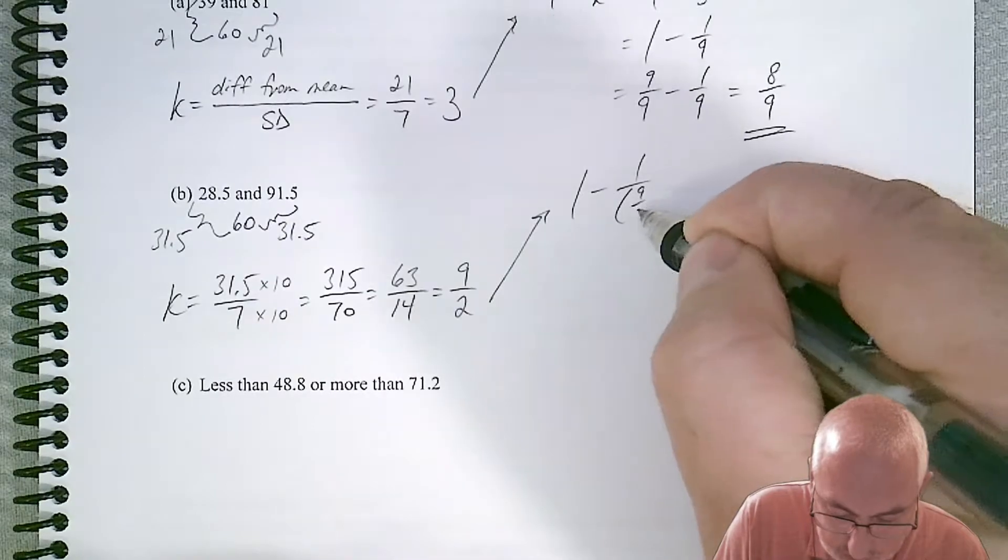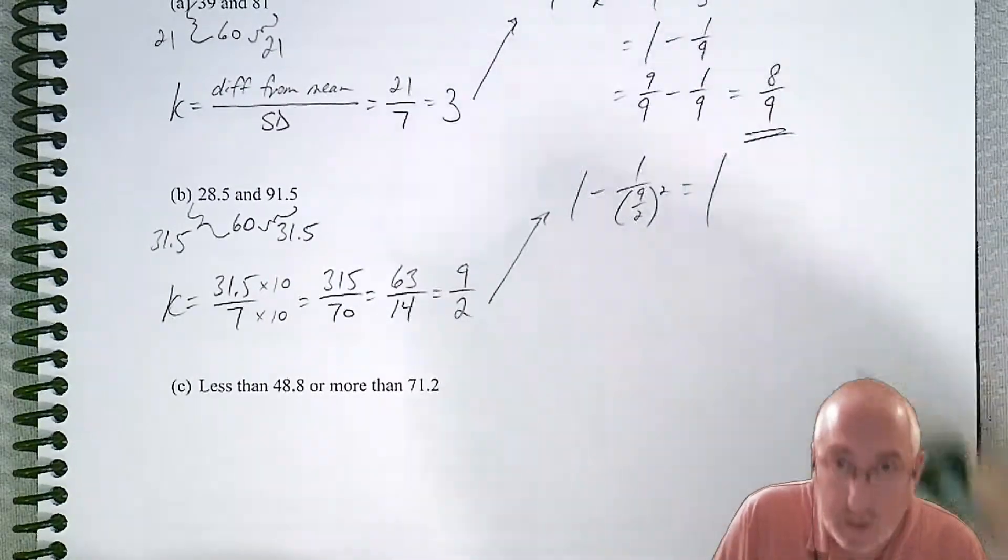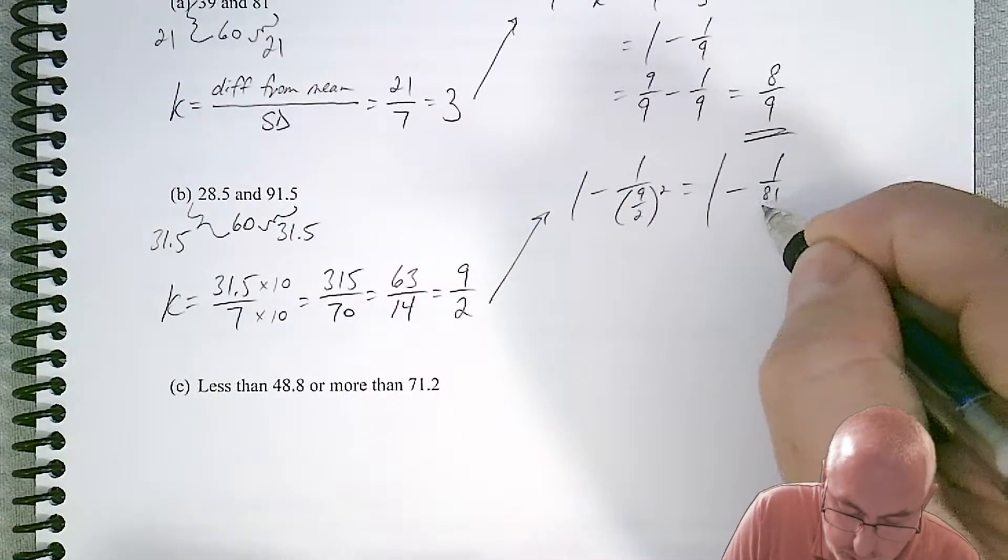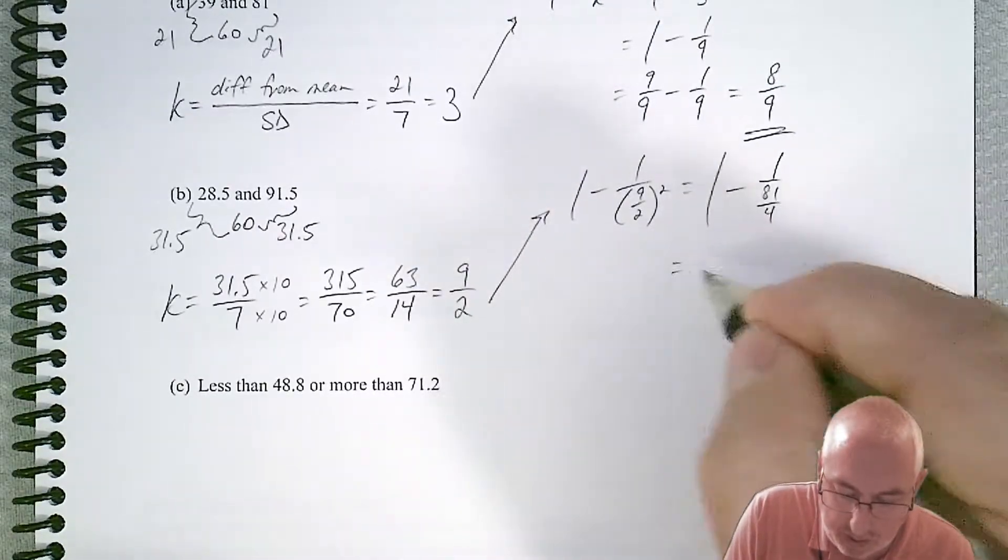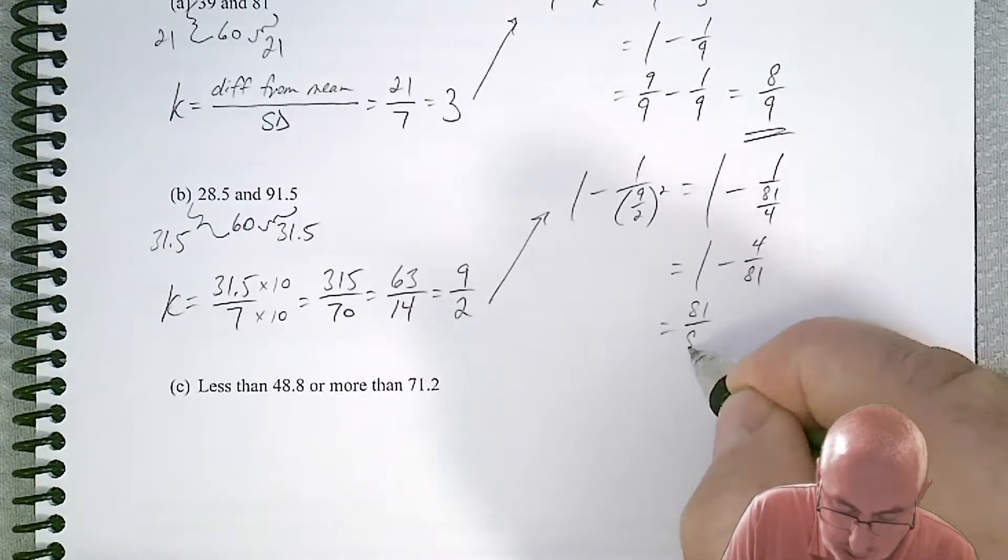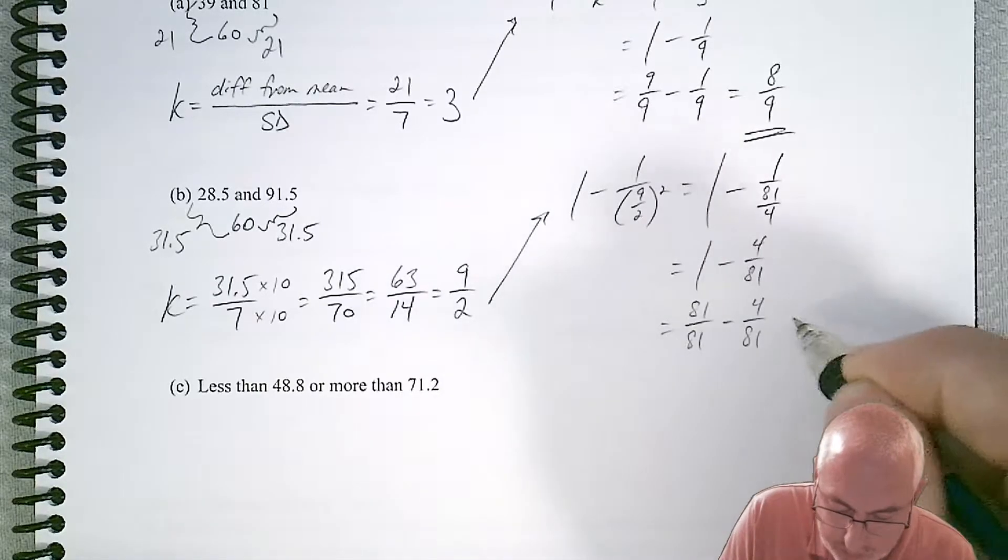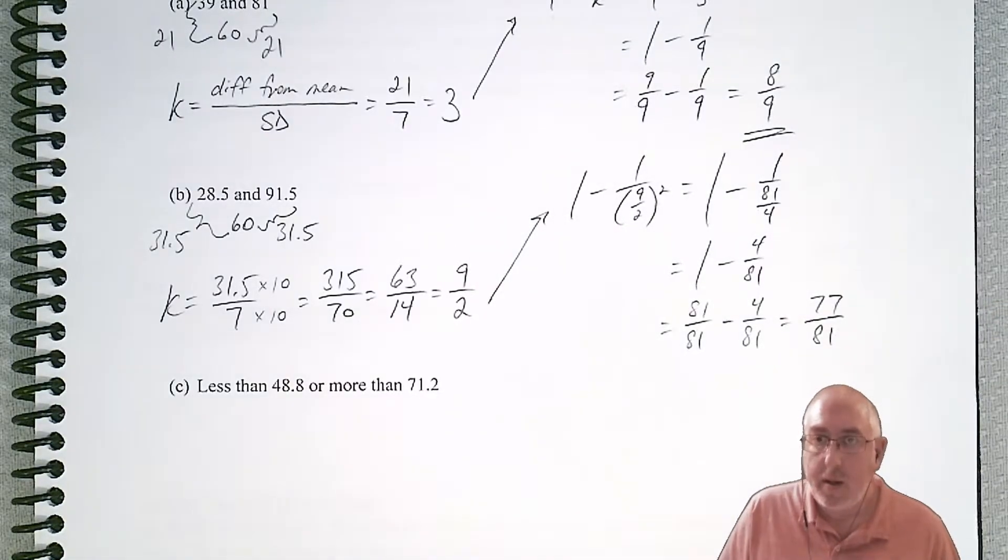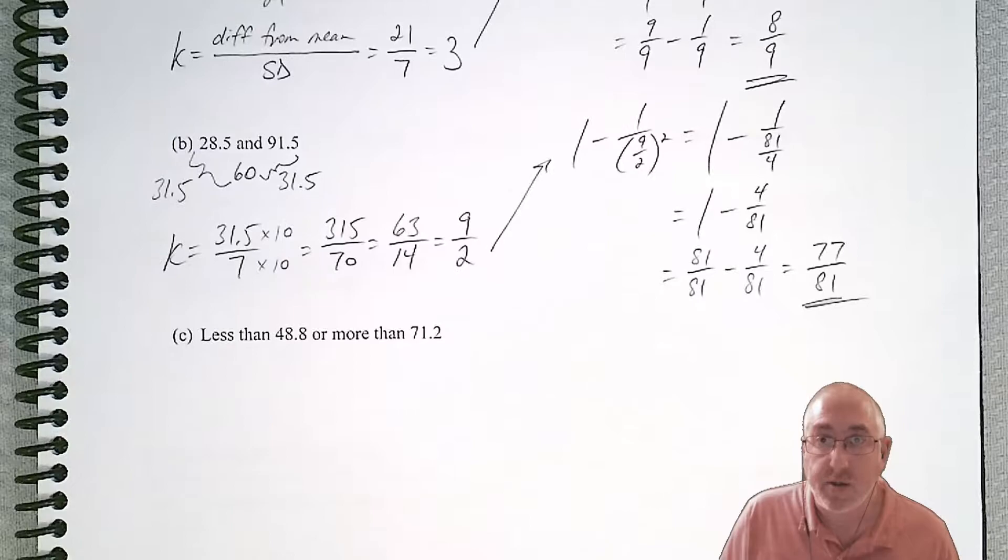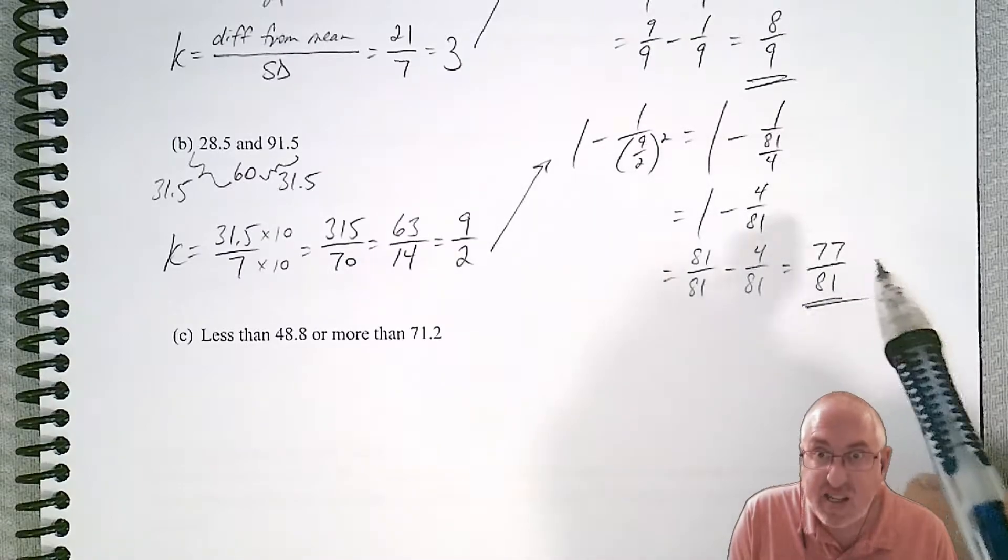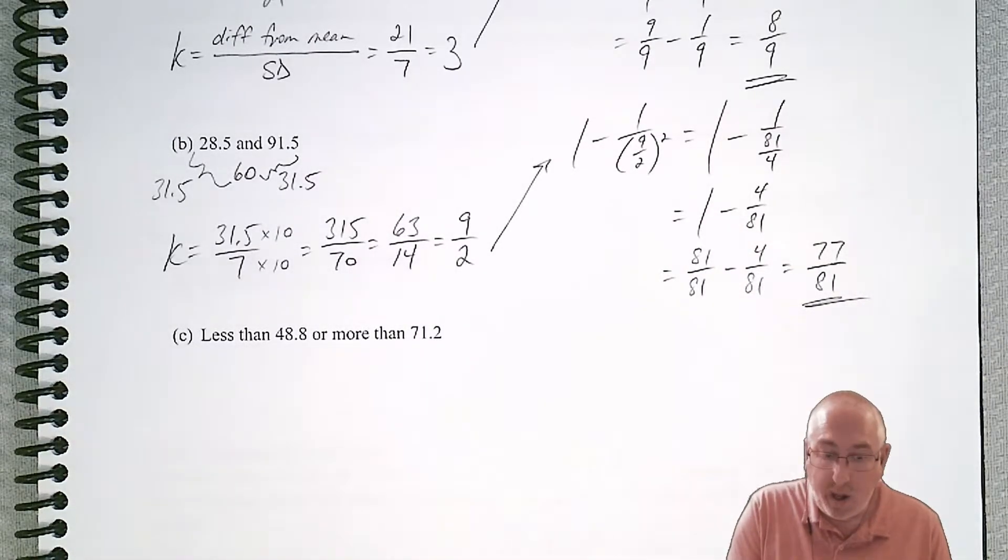So if we plug that in, we start with that, and now we have a square. So square the top, square the bottom. Then we can flip it. And then we can change the 1 into 81 over 81, and subtract to get 77 over 81. And so that should be our answer. So if there were 81 numbers in that data set, 77 of them should be between 28.5 and 91.5 for this data set.